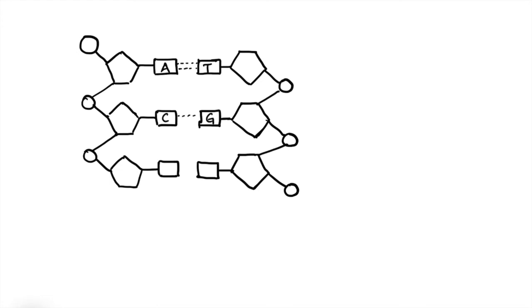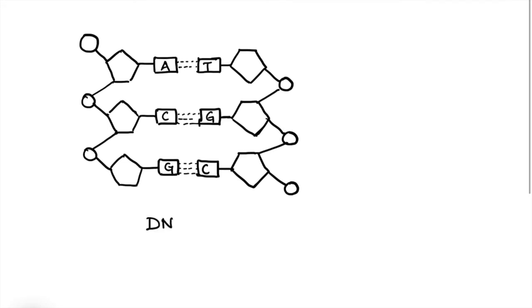They show complementary base pairing. The adenine pairs with thymine with two hydrogen bonds, and the guanine pairs with cytosine with three hydrogen bonds. So this is the structure of the DNA molecule.